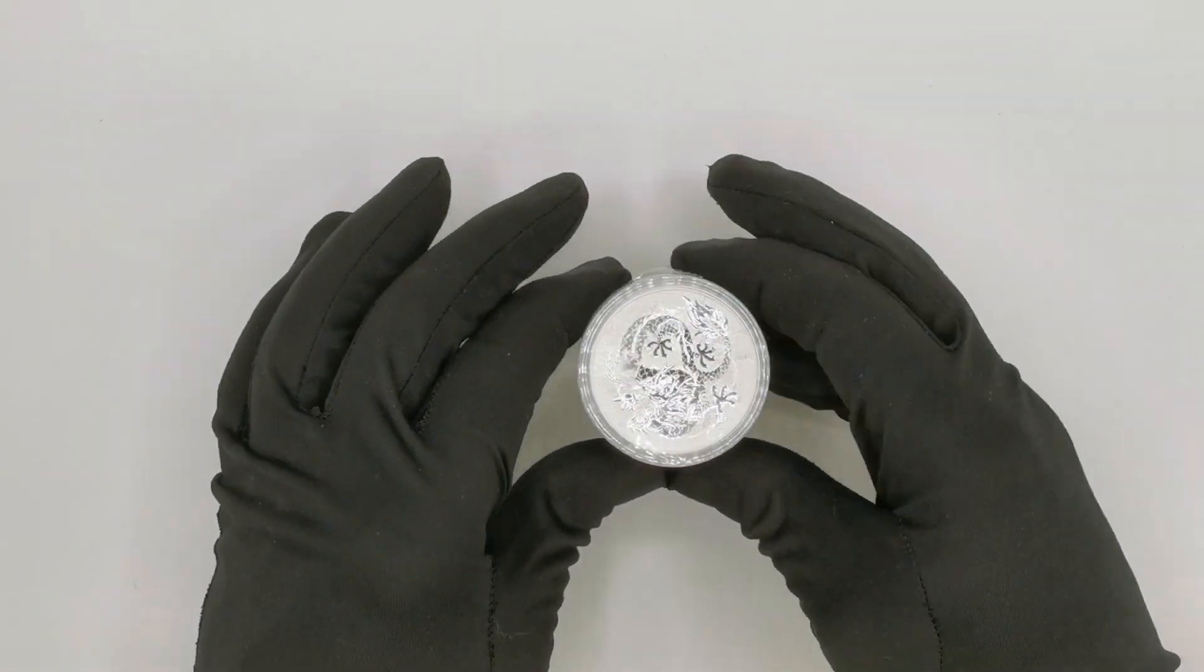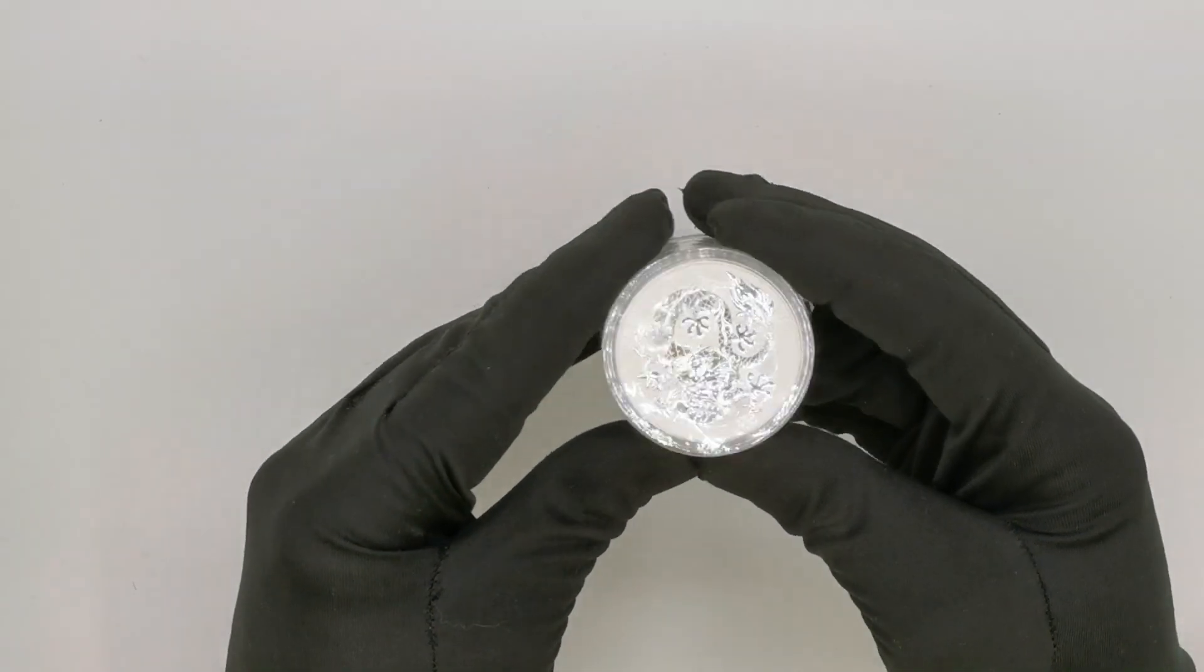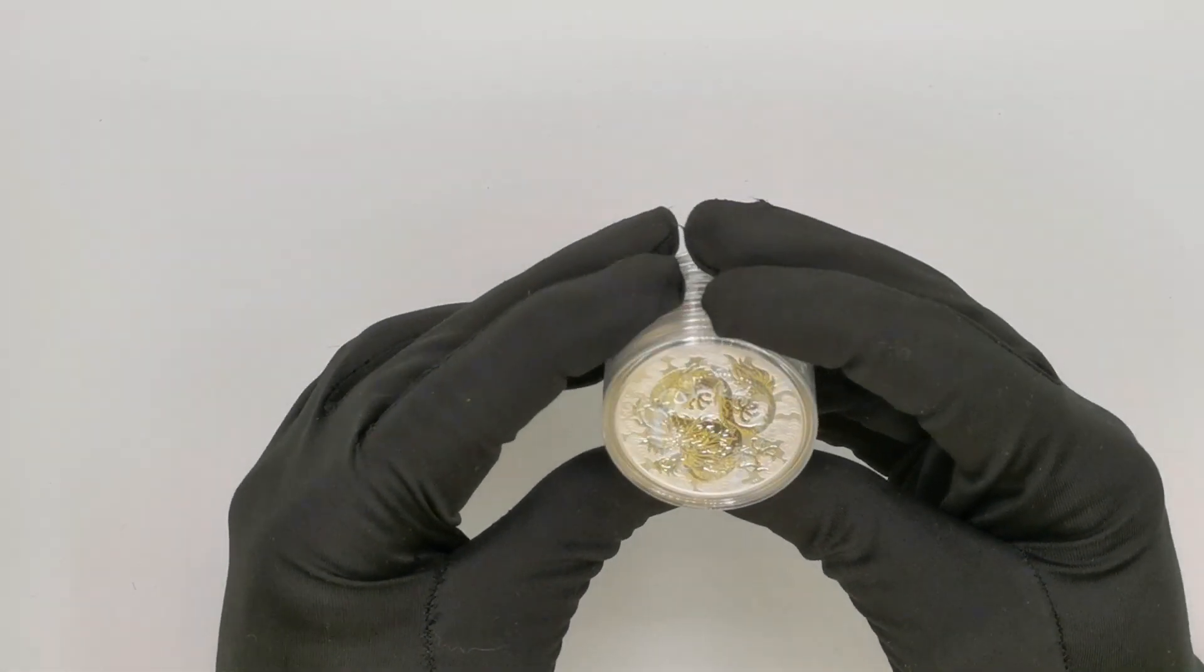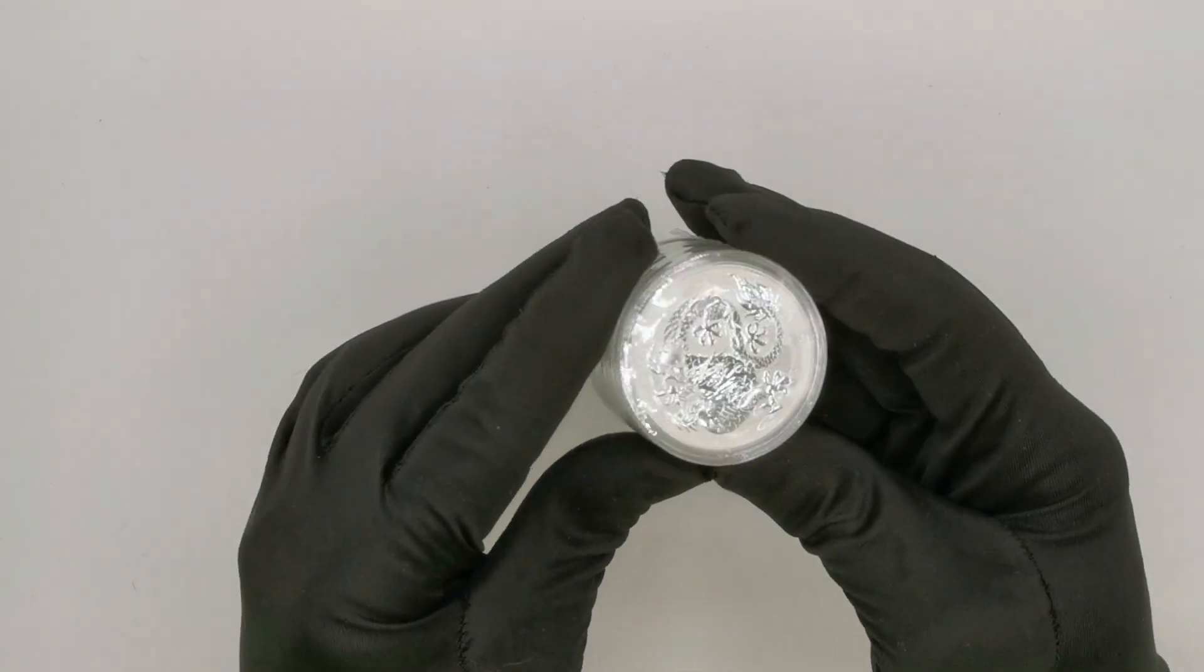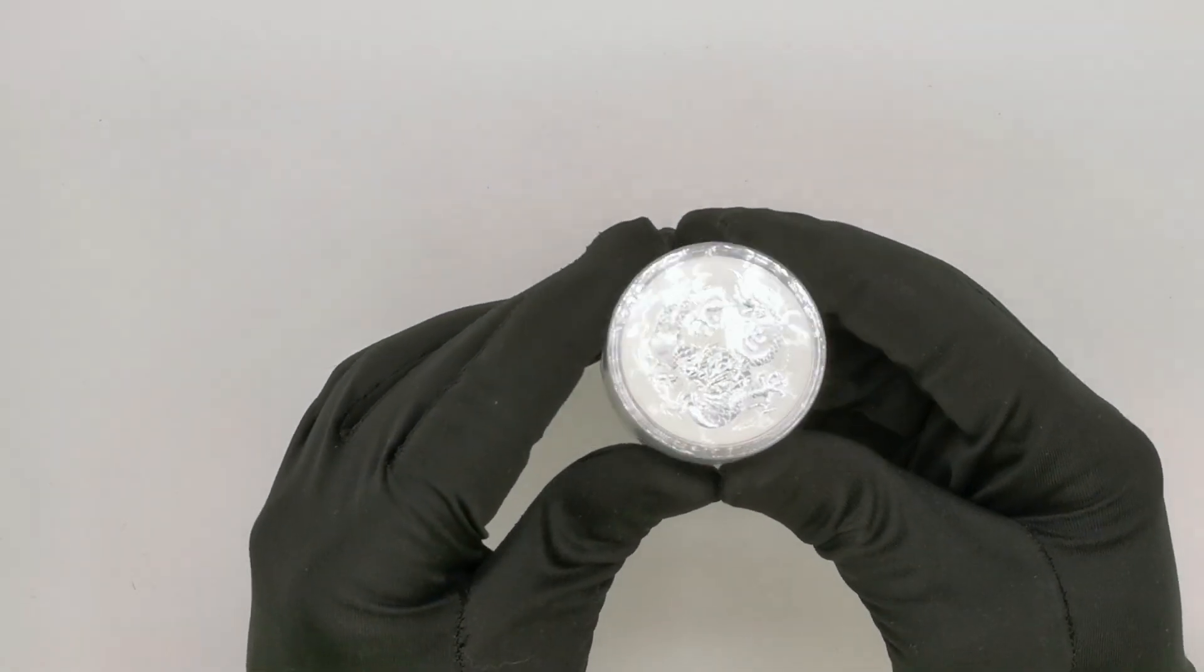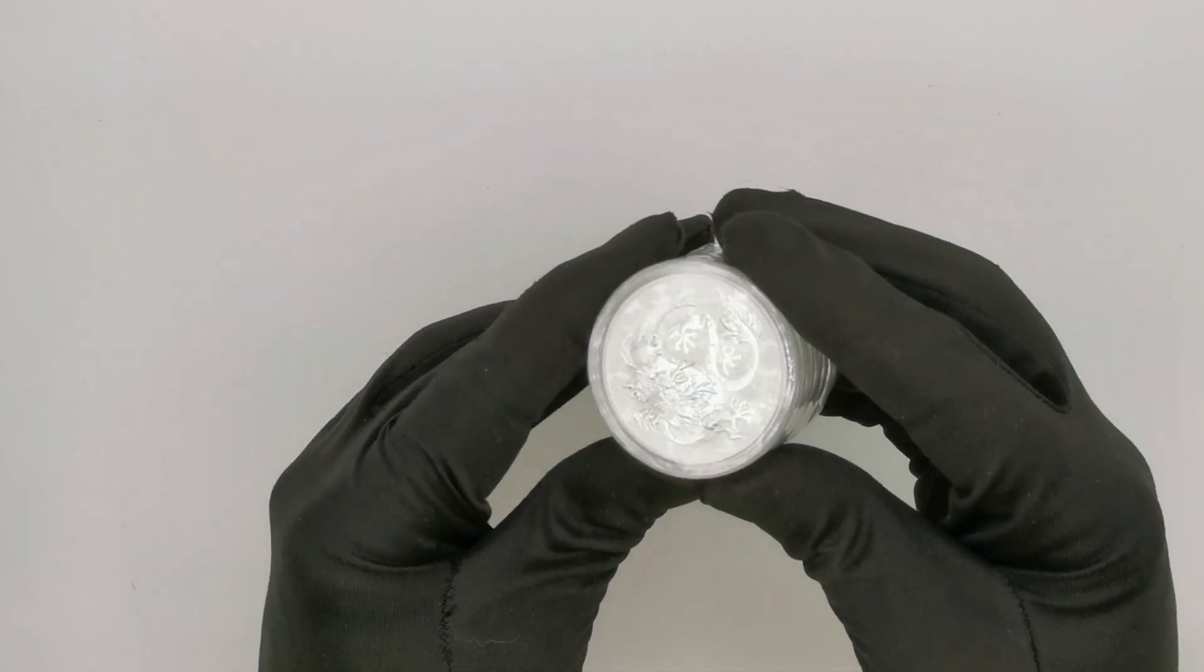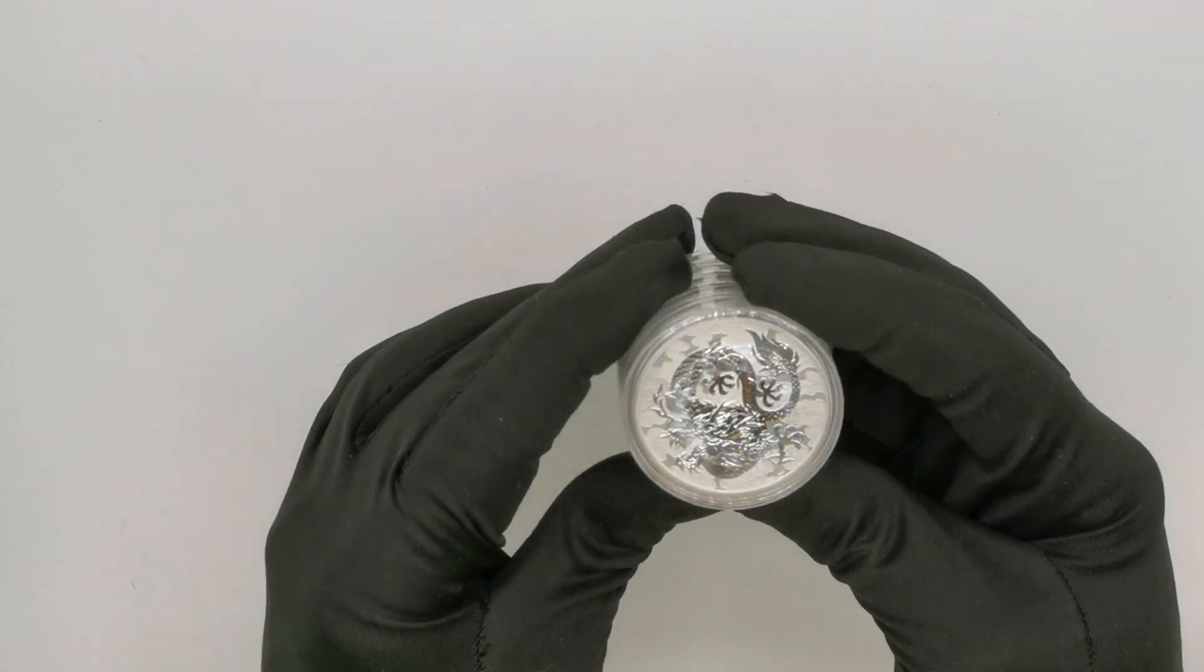Today we're going to do a quick review of the latest bullion release by the Perth Mint, the 2021 Dragon one ounce silver bullion coin. Now Perth Mint has been pumping out those limited edition silver bullion coins like there's no tomorrow, but you know what, dragons always work really nice on coins. So let's have a look what they came up with.